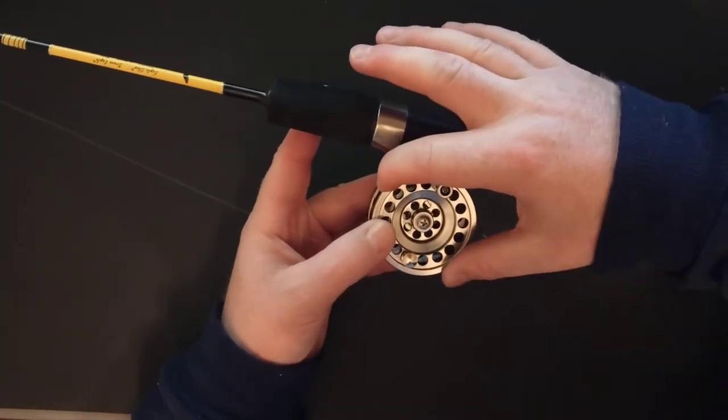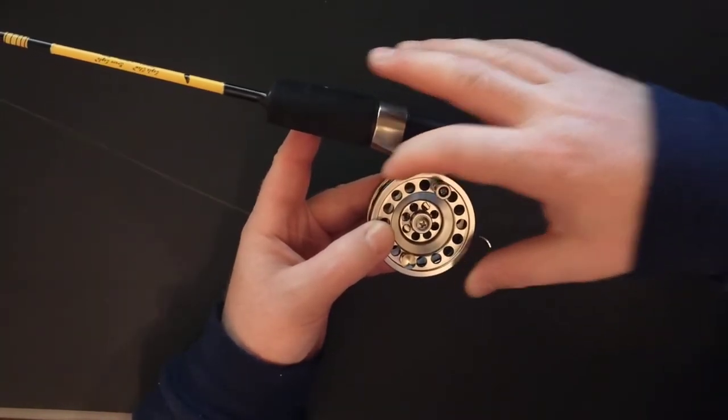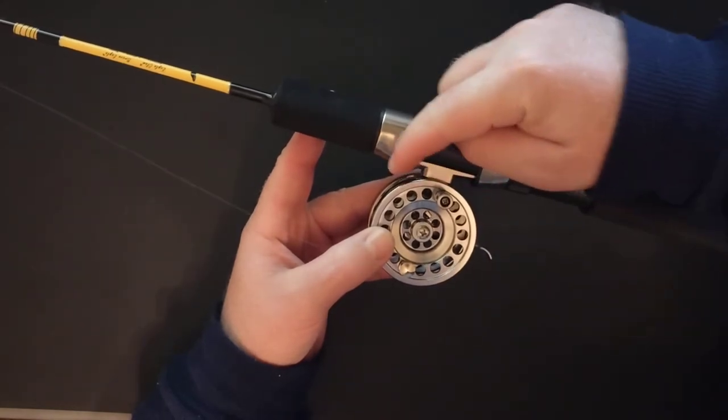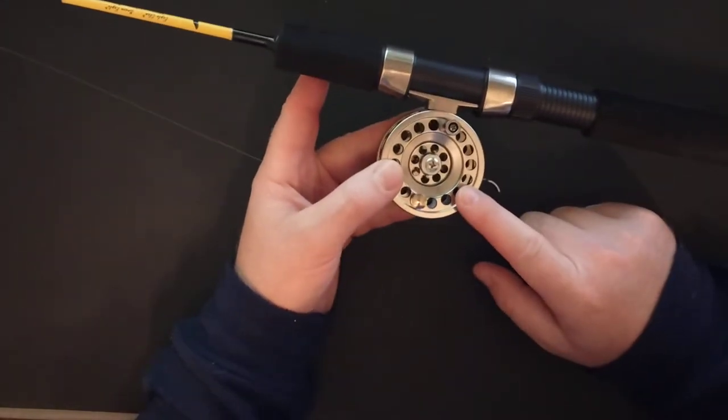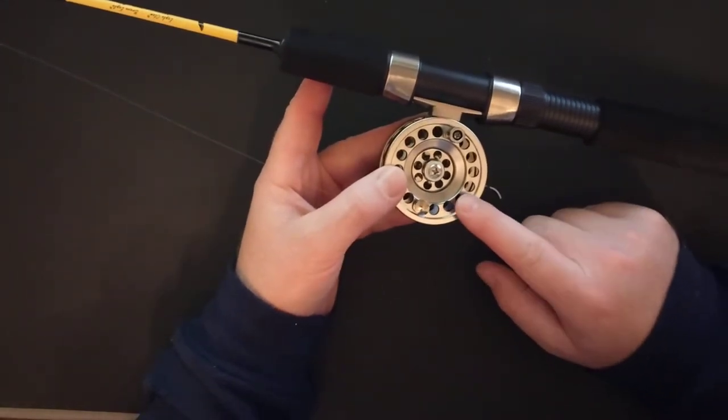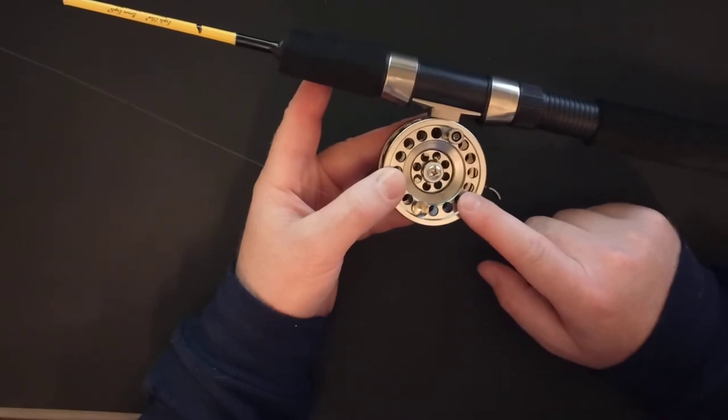So it's 60mm here. The reel seat is about 2.4 inches or 6.2 centimeters. And again, this is the Fairyland FW-1701 model.